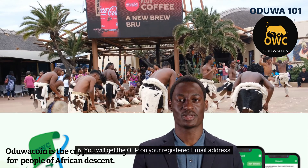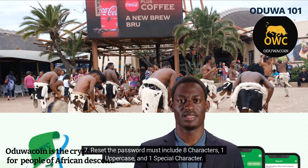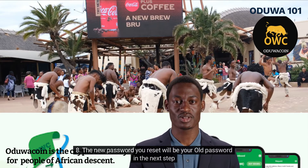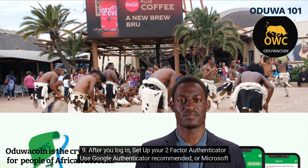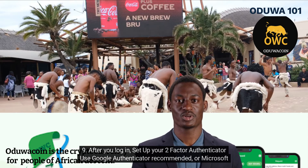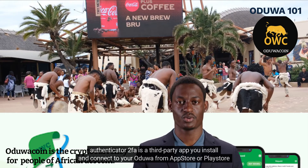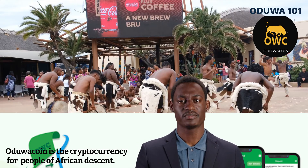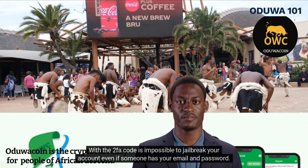Six: you will get the OTP on your registered email address. Seven: when resetting the password, it must include eight characters, one uppercase, and one special character. Eight: the new password you reset will be your old password in the next step. Nine: after you log in, set up your two-factor authenticator — use Google Authenticator (recommended) or Microsoft Authenticator. 2FA is a third-party app you install and connect to your Ojuwa from the App Store or Play Store as extra security to prevent anyone from jailbreaking into your account. With the 2FA code, it is impossible to jailbreak your account even if someone has your email and password. Highly recommended.